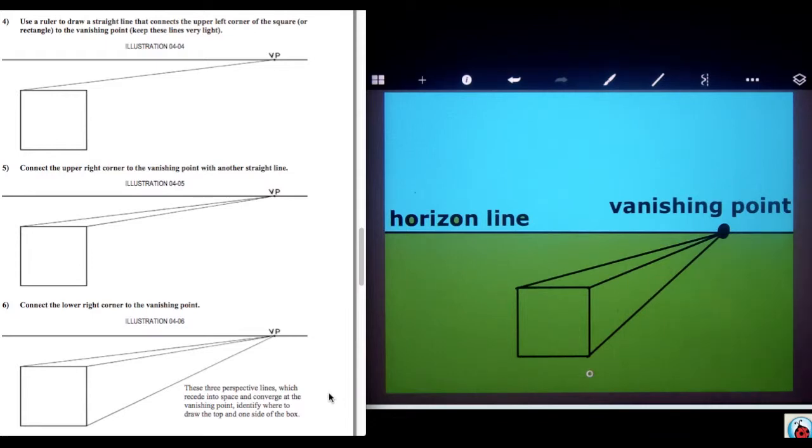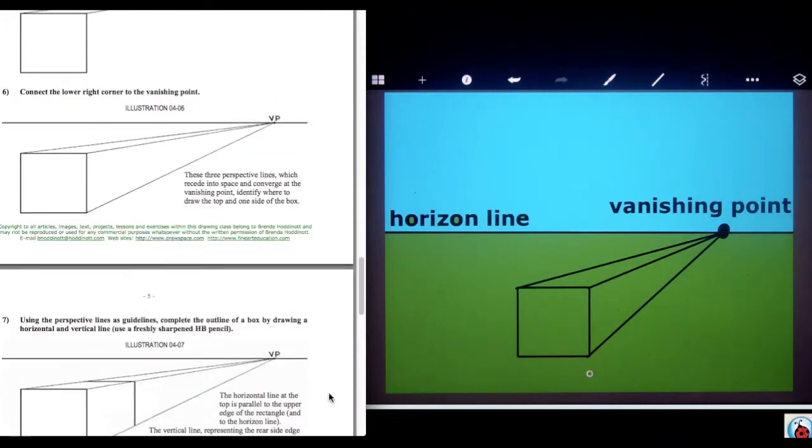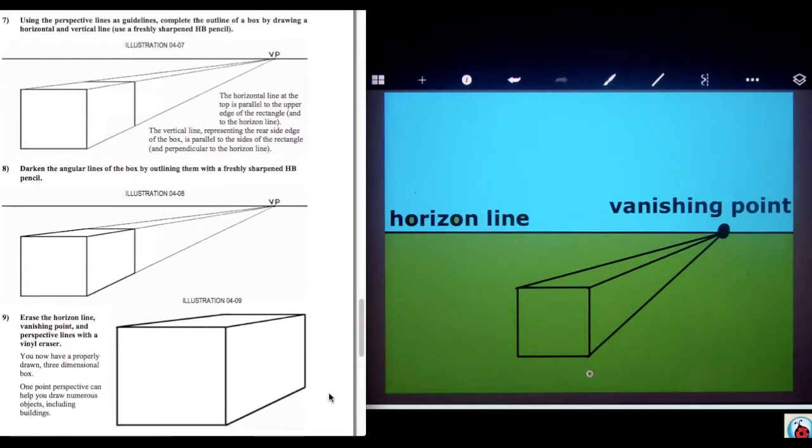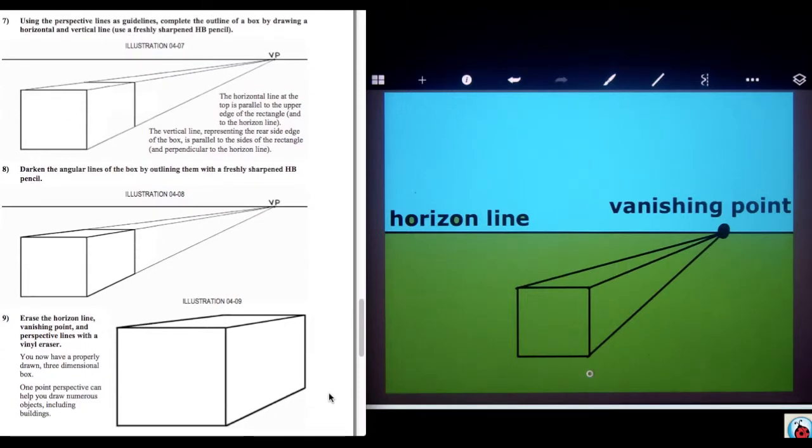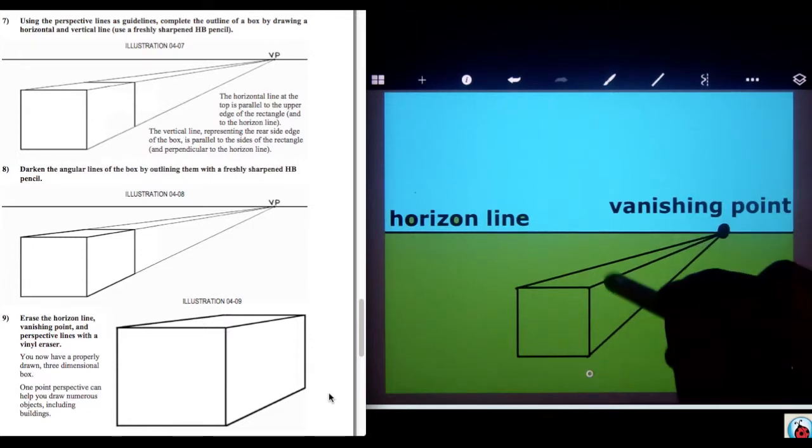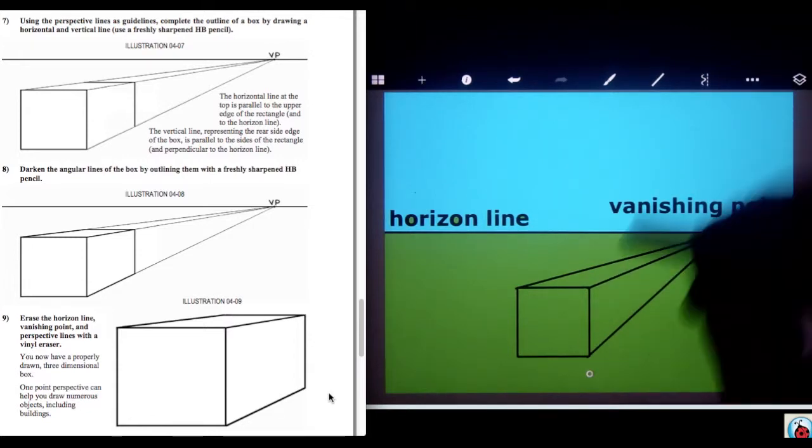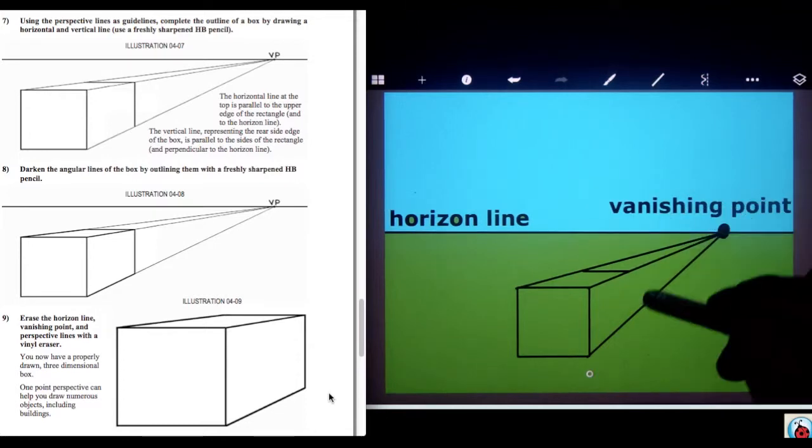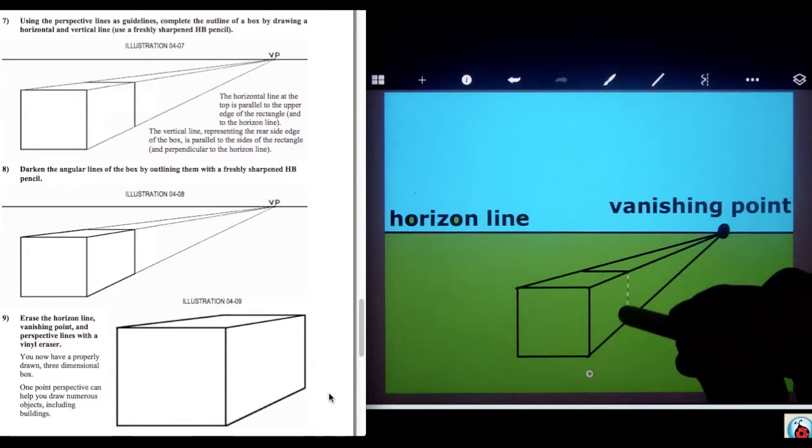That identifies where the top of our box and the side of our box are going to be. Our next two lines must have certain orientations. We need to create a line that is parallel to the horizon line for the top of our rectangular prism. It must be parallel to the horizon line. And then we need to create a line that is perpendicular to the horizon line for this edge of our rectangular prism.